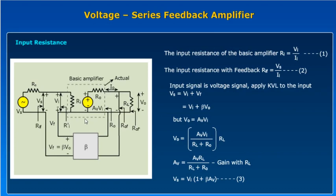This represents your basic amplifier. For this amplifier, the total feedback amplifier input resistance is represented with RIF, and only the input of your basic amplifier is RI. The output from your total feedback amplifier is ROF, and including your load resistance is ROF dash, and only the basic amplifier output is R0. From this, we can define the input resistance of the feedback amplifier. RIF is equal to Vs by input current II.